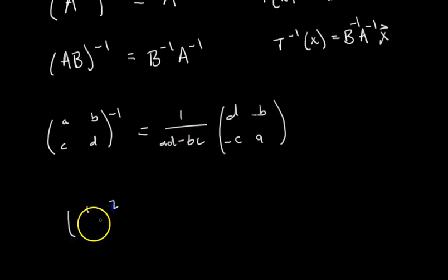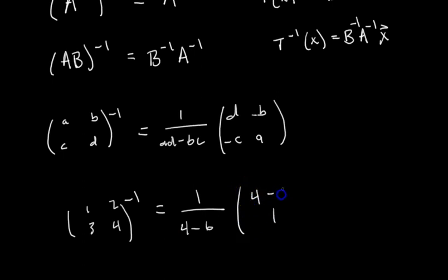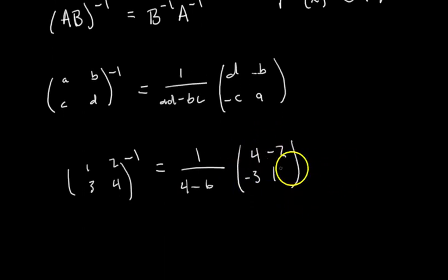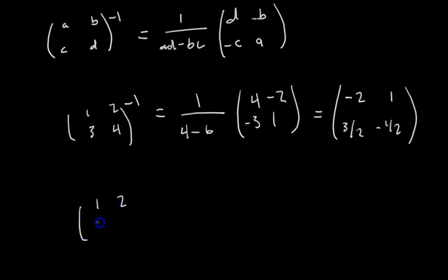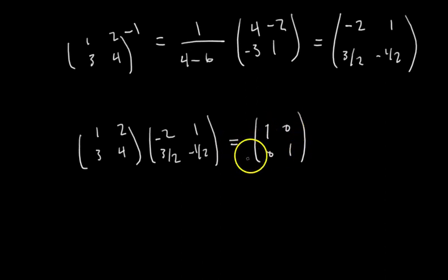So quick example, [1, 2; 3, 4] inverse equals 1 over (4 minus 6) times [4, -2; -3, 1], which simplifies to [-2, 1; 3/2, -1/2]. So this matrix is the inverse of this matrix. That would mean if you just take this matrix [1, 2; 3, 4] times [-2, 1; 3/2, -1/2], I'm not going to do it, but you can trust me, you can try it for yourself, you get the identity matrix.